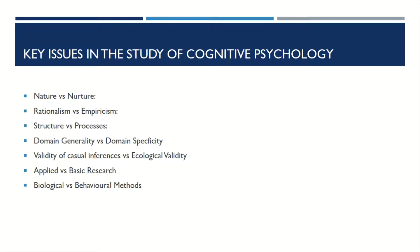Structure versus processes: psychologists may study the structures of the human mind or human thinking processes. Domain generality versus domain specificity: a process or observation may be studied as limited to a single domain or as applying to all domains. Validity of causal inferences versus ecological validity: psychologists may use controlled experiments for valid causal inferences, or more naturalistic techniques for ecological validity.